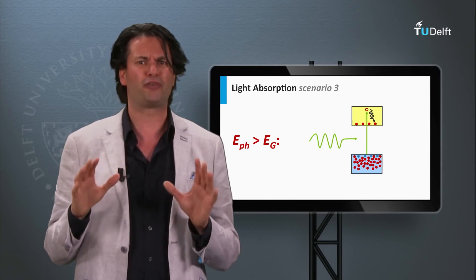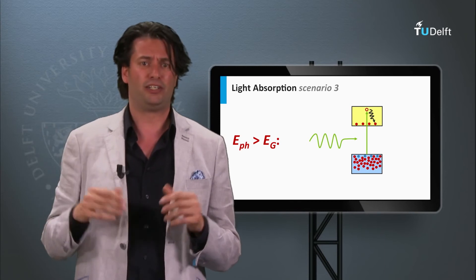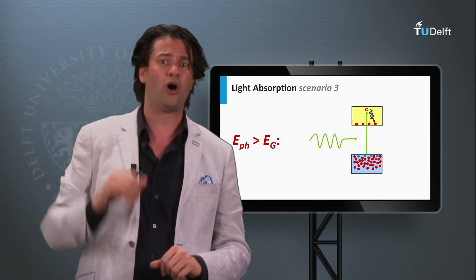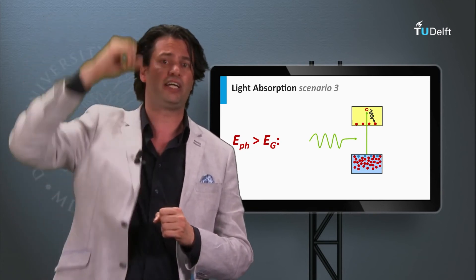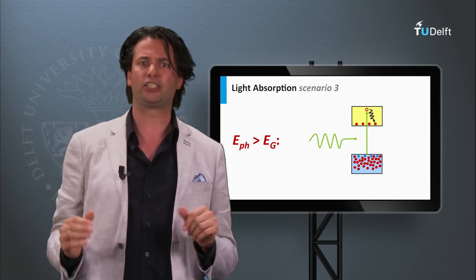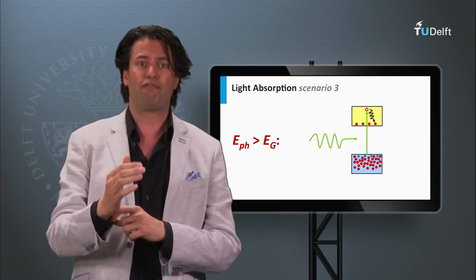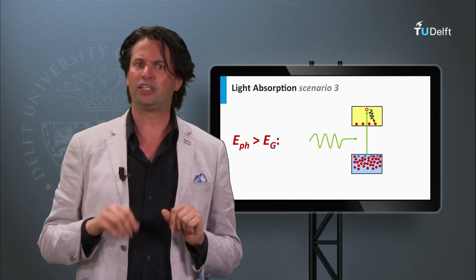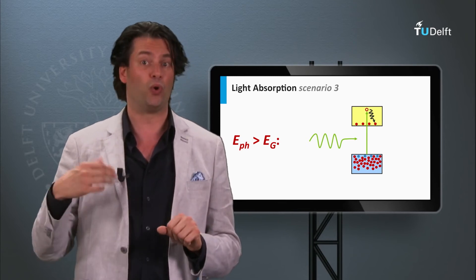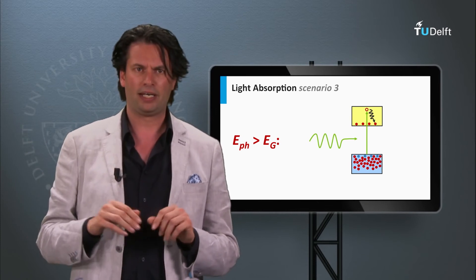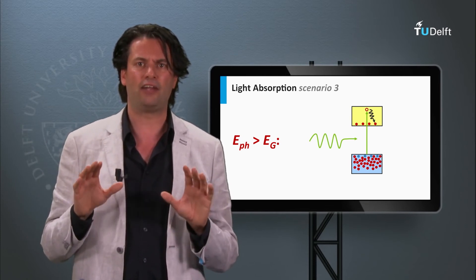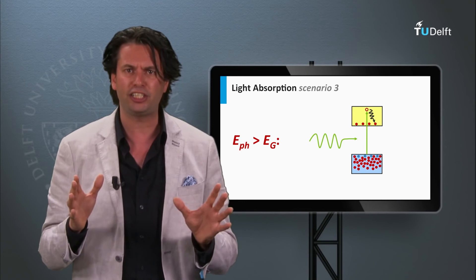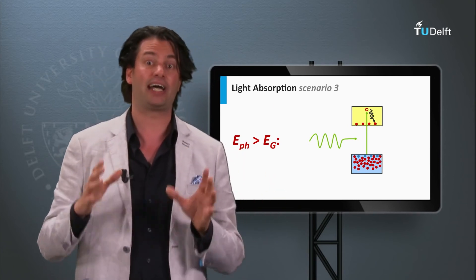Another situation is when the photon has an energy much larger than the band gap. This photon can excite an electron at an energy level deeper in the valence band into the conduction band, or an electron to a higher energy level in the conduction band. In these situations, the hot electrons or holes very fast relax back to the lower energy positions — the bottom of the conduction band for electrons and the top of the valence band for holes. This extra energy is released as heat, heating up the semiconductor material. So the rest energy — the photon energy minus the band gap energy — ends up as heat.